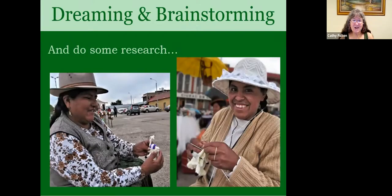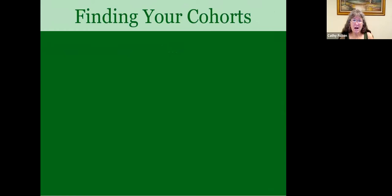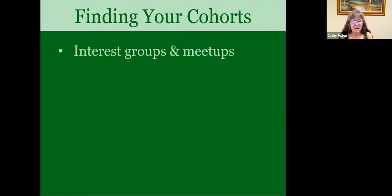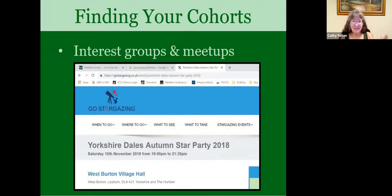There are several ways that you can find your cohorts once you have a theme and a destination. There are interest groups and meetups — I found meetups very useful for my theme. I did a little test: what if I were in the Yorkshires in England and wanted to find a star party? I Googled 'star party Yorkshire' and found right away there was going to be one in another week or so. That's one way to look for groups of people.